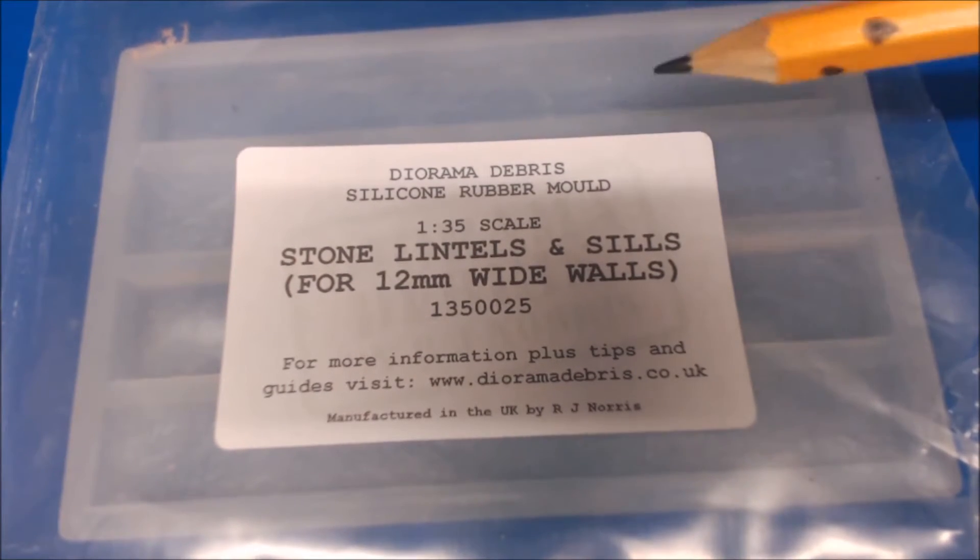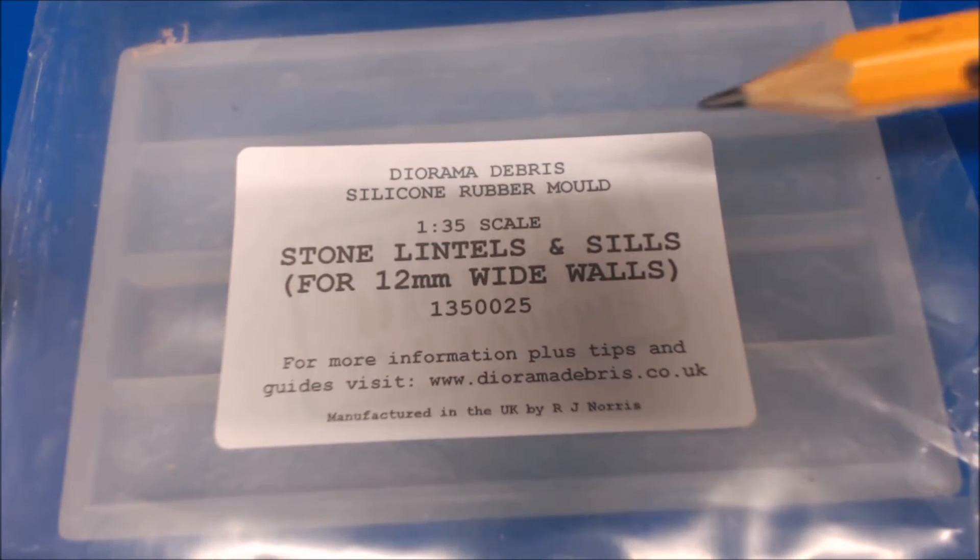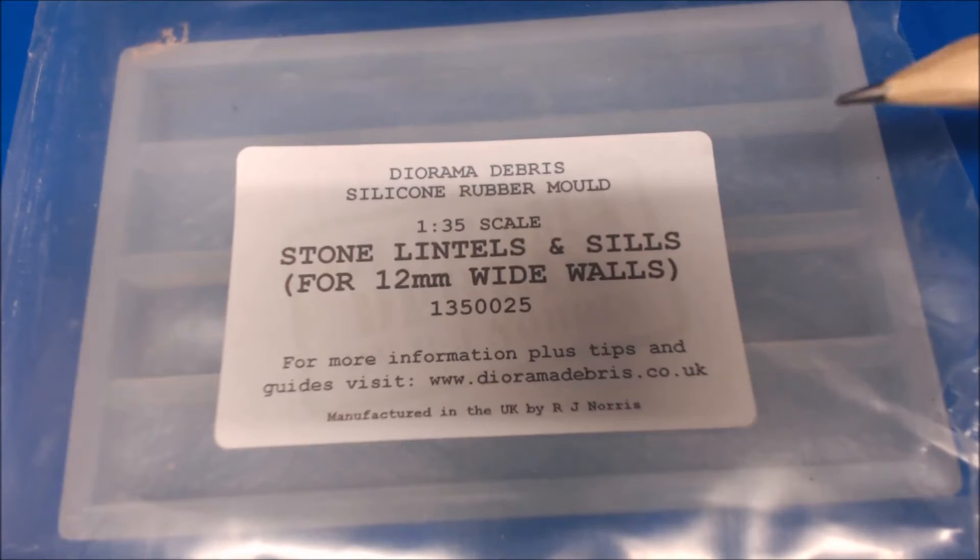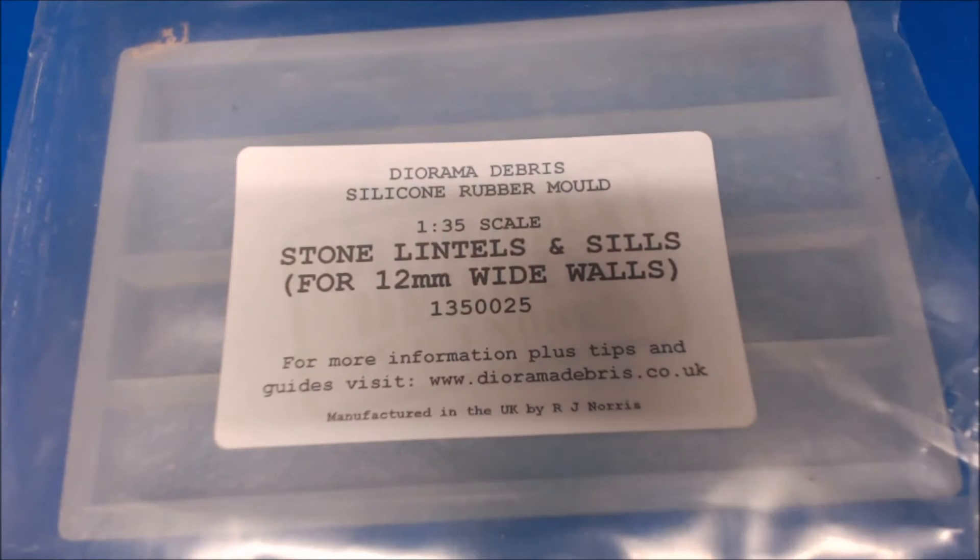We'll start off from the top. This is from Diorama Debris. It's 1:35 scale. This is a stone lintel and seal for a 12mm wide wall. The mould number is 1350025. Produced in the UK by RJ Norris.